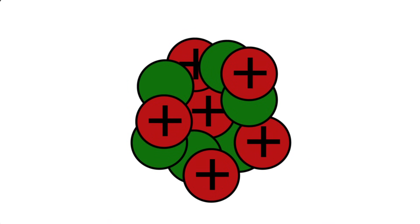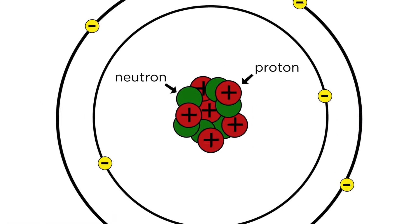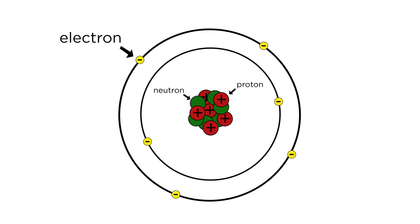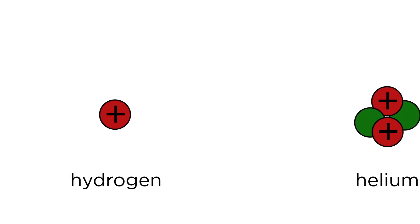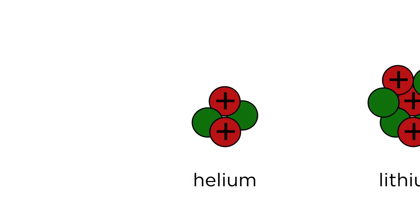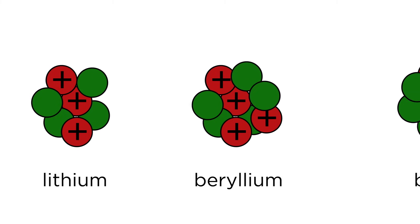An atom consists of positively charged protons, neutrons, which have no charge, and negatively charged electrons. An element is defined by the number of protons in the nucleus. One proton is hydrogen, two is helium, three lithium.